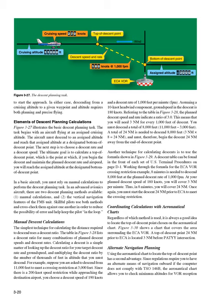Skillful pilots use both methods and cross-check them against one another in order to reduce the possibility of error and help keep the pilot in the loop. Manual descent calculations: the simplest technique for calculating the distance required to descend uses a descent ratio. The table in Figure 3-28 lists a descent ratio for many combinations of planned descent speeds and descent rates. Calculating a descent is a simple matter of looking up the descent ratio for your target descent rate and ground speed, and multiplying the descent ratio by the number of thousands of feet in altitude that you must descend. For example, suppose you are asked to descend from 11,000 feet to meet a crossing restriction at 3,000 feet. Assuming a 10-knot headwind component, ground speed in the descent is 180 knots.